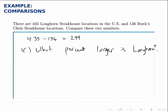So in this case, I'm saying what percent larger is Longhorn than Ruth's Chris? So since I'm comparing to Ruth's Chris, I'll divide the difference by the number of Ruth's Chris locations there are. So this will be 299 divided by 136. And we find that that's 219.9% larger.